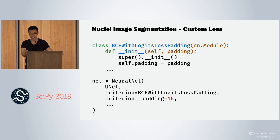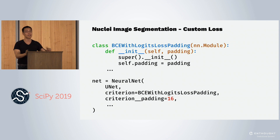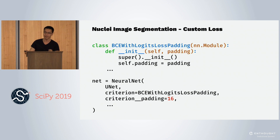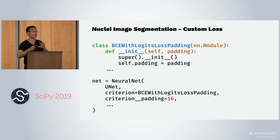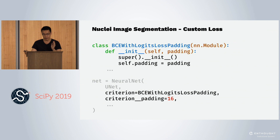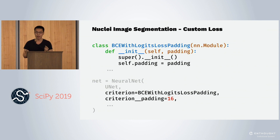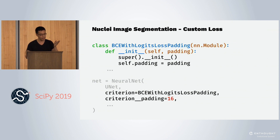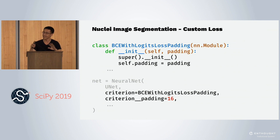We also need a custom loss function that understands we're ignoring the padding around the images. In this case, it's binary cross entropy with logits loss with padding — BCE with logits loss padding. When you initialize it, it needs the padding value so it knows when to ignore the edges. If you want to change the padding, it uses a Scikit-Learn-style set_params with double underscore notation, setting the padding parameter equal to 16.